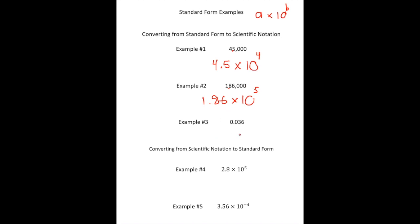Example number three, we have a decimal. Our a value has to be greater than or equal to one but less than 10, so that gives us 3.6. This time we're moving the decimal two spots to the left, and every time we do that we're dividing by 10. So that's 3.6 times 10 to the negative second power.